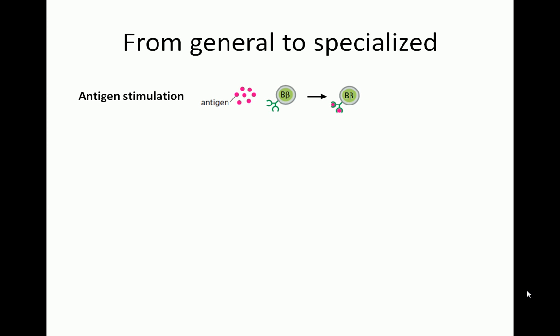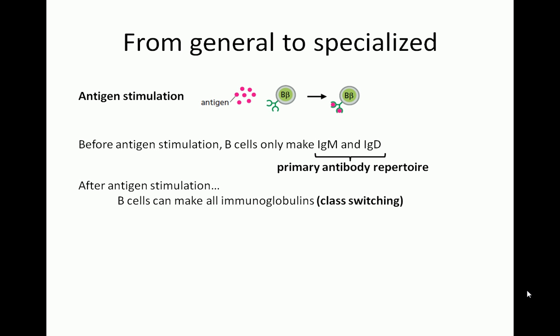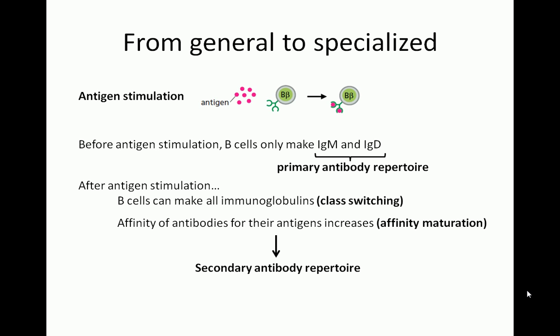Before antigen stimulation, B cells only produce IgM and IgD. This initial set of antibodies is known as the primary antibody repertoire. After antigen stimulation, B cells are able to make all classes of immunoglobulins in a process called class switching. They also increase the affinity of antibodies for their antigens in a process called affinity maturation. These processes build up the secondary antibody repertoire, which is a much more specialized set of antibodies that bind antigens with much greater specificity and affinity.